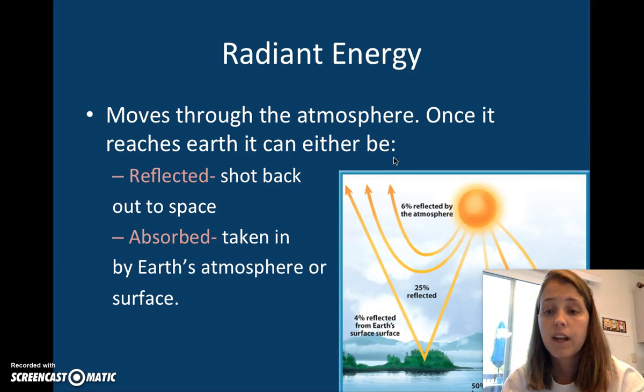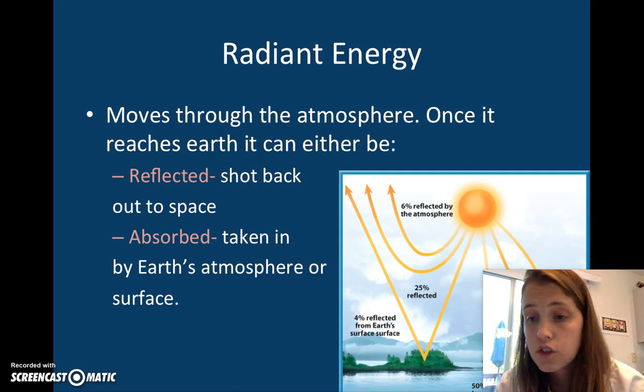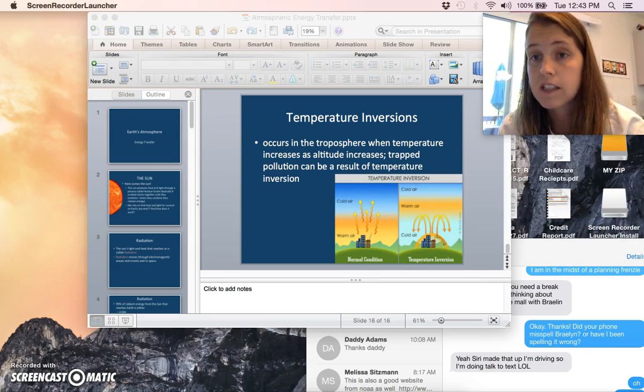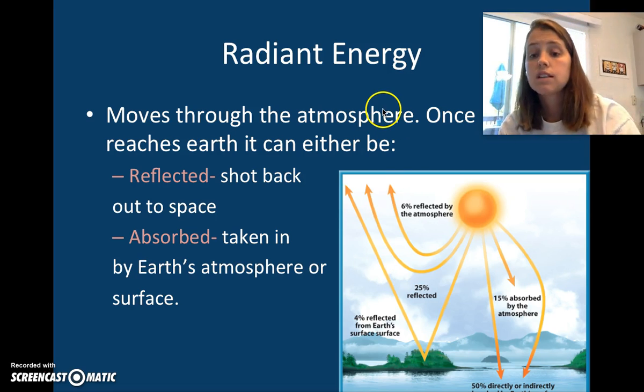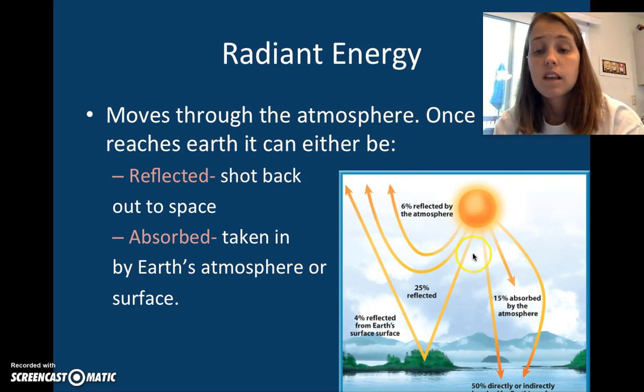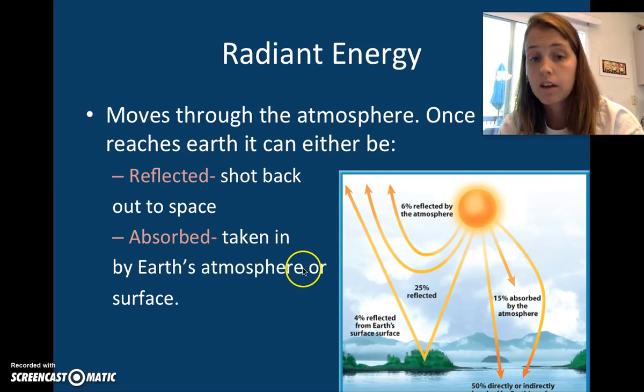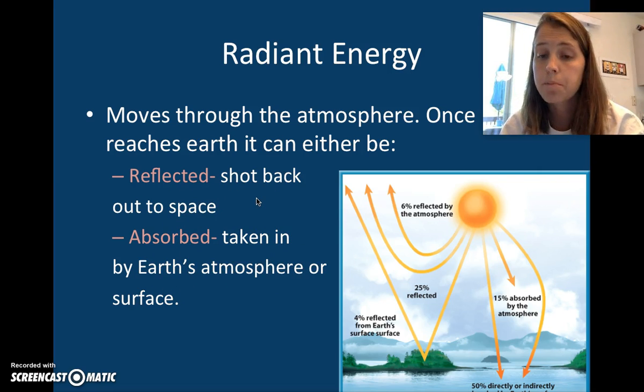Radiant energy. Radiation is a type of energy called radiant energy. It moves through our atmosphere. We have all the different layers of the atmosphere: the thermosphere, then the mesosphere, stratosphere, and troposphere. Basically, two things can happen to that radiant energy as it moves towards the Earth. It can be absorbed, taken in by the Earth's atmosphere or surface, or it can be reflected, shot right back out into space.